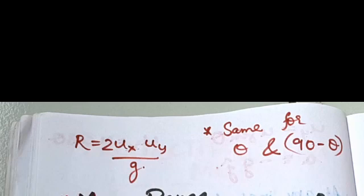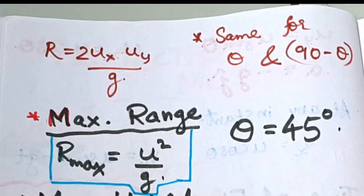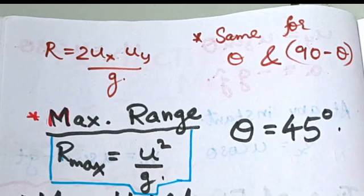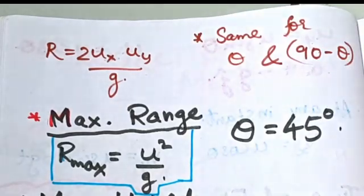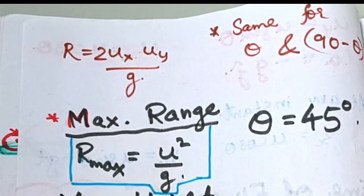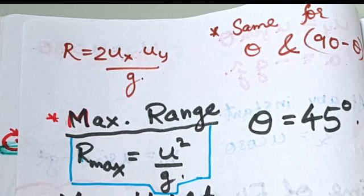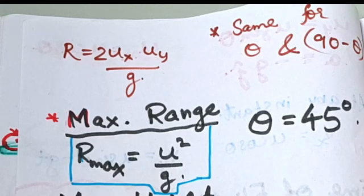Maximum range: R equals u squared sin 2 theta by g. For maximum range, sin 2 theta must equal 1, so 2 theta equals 90 degrees, meaning theta equals 45 degrees. Therefore R_max equals u squared by g.